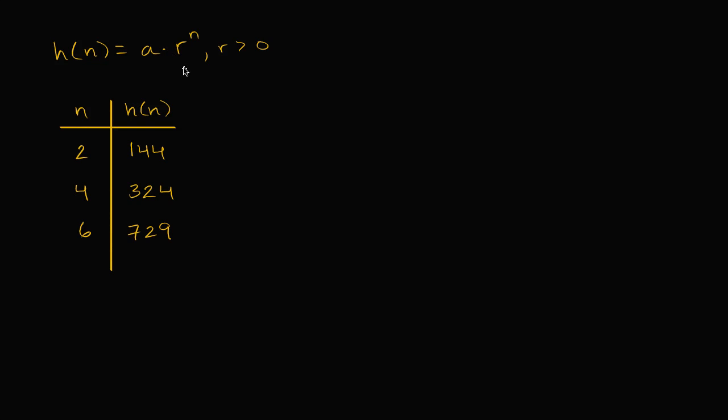Like always, pause the video and try to give it a go. All right, now let's do this together. So I'm going to focus on r first, the common ratio. If we had successive n's, if we had h of 3, then we could just find the ratio between h of 3 and h of 2, and r would just come out of that. Or the ratio between h of 4 and h of 3, we could solve explicitly for r.